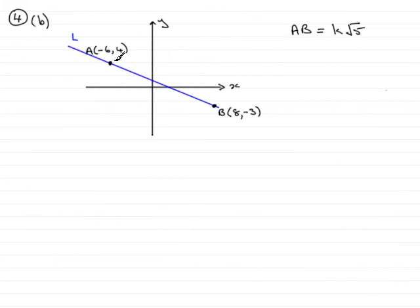Hi, now in part 4B what we are asked to do is find the distance A to B and give AB in the form K root 5 where K is an integer.